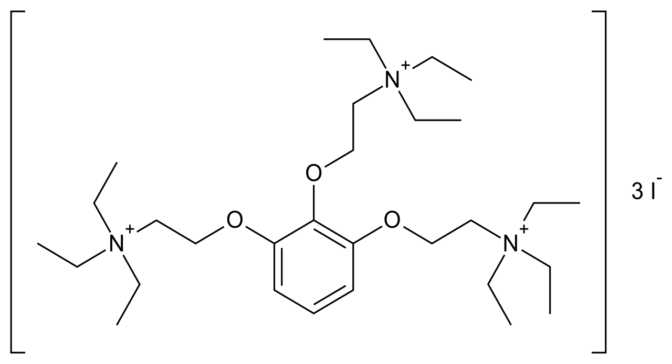Gallamine triethiodide has a parasympatholytic effect on the cardiac vagus nerve, which causes tachycardia and occasionally hypertension.